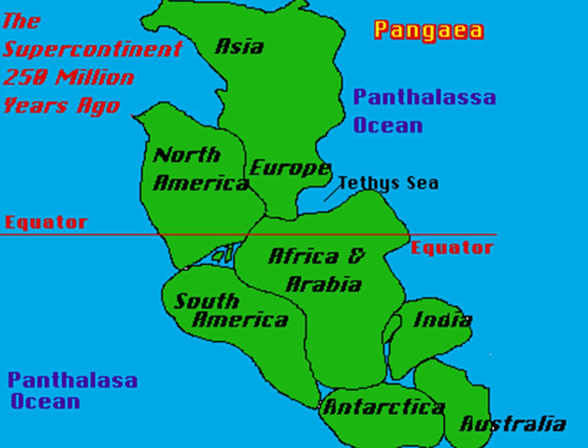But over time, something happened and Pangaea broke up. And this was not the first idea — later on scientists started looking for evidence and found it. There are theories that Pangaea was not the first supercontinent; there were supercontinents before that, such as Rodinia. There's also the rebound theory, which says that about every 200 to 250 million years or so, all the continents come together and form a Pangaea, then eventually break up again, and this just repeats itself time and time again.